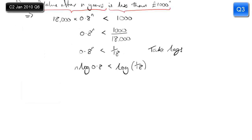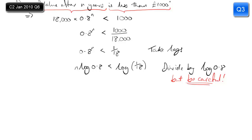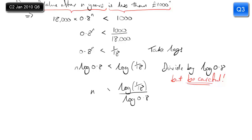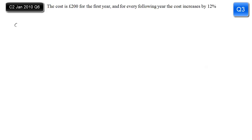Because n is in the power, we take logs of both sides: n log 0.8 is less than log of 1/18th. Use logs to base 10. Now we divide by log of 0.8, but we must be careful — log of 0.8 is a negative number. When dividing an inequality by a negative, you must flip the sign. So less than becomes greater than. Plugging into the calculator: log(1/18) divided by log(0.8) gives 12.952... so n must be a whole number greater than that — n equals 13.